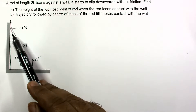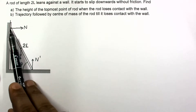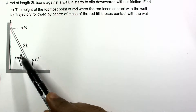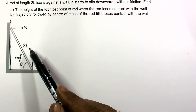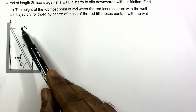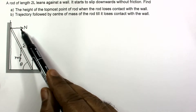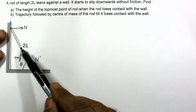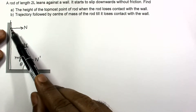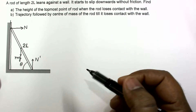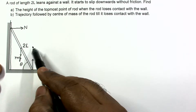The center of mass of this rod will accelerate in the horizontal direction due to the normal reaction from the wall, and will also accelerate in the vertical direction. When the rod loses contact with the wall, that normal becomes zero. Till then, the normal was causing the center of mass to accelerate forward, so the horizontal velocity component was increasing. To find when it loses contact, it is sufficient to find when the horizontal velocity component of the center of mass is maximum.